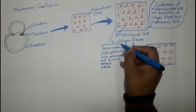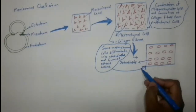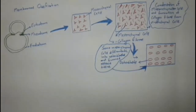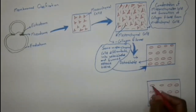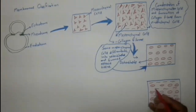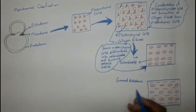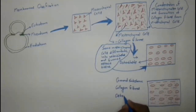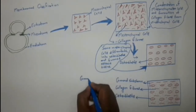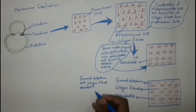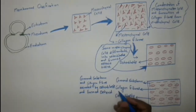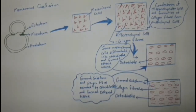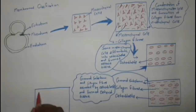The next step is formation of osteoblasts. Some mesenchymal cells differentiate into osteoblasts and form osteoid tissue. Here is the osteoid tissue, with ground substance and collagen fibers secreted by osteoblasts, forming the osteoid tissue.